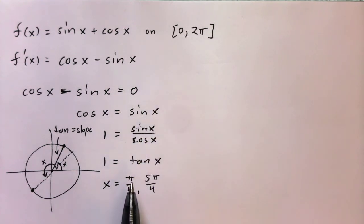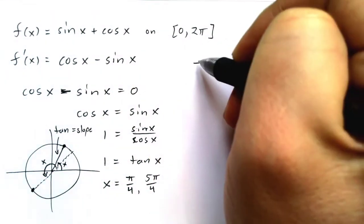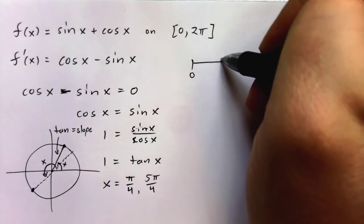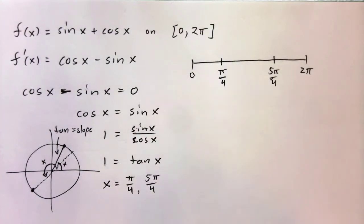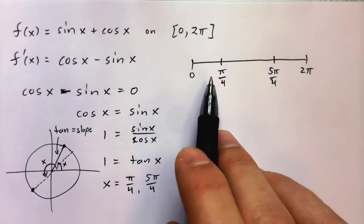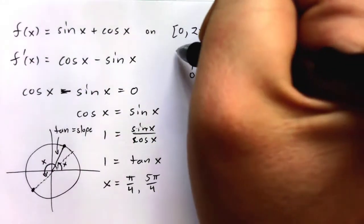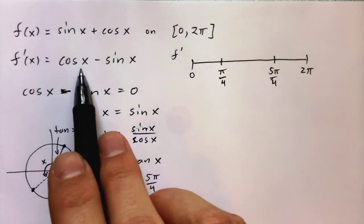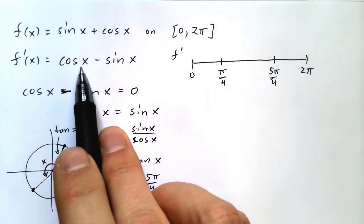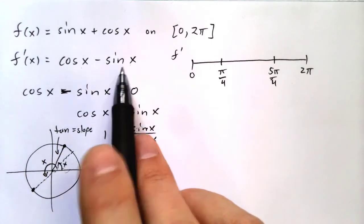So the derivative is zero at pi over 4 and 5 pi over 4, which splits the interval 0 to 2 pi into three parts. In the first part, between 0 and pi over 4, take pi over 6: cosine of pi over 6 is root 3 over 2, and sine of pi over 6 is 1/2. The bigger number minus the smaller number is positive there.